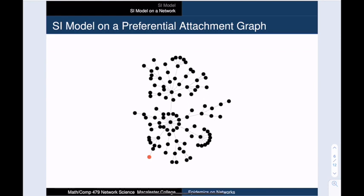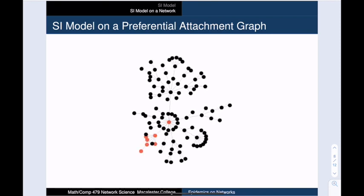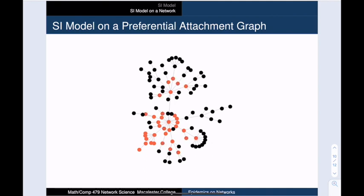Here is what the SI model would look like on a power law graph generated using preferential attachment. This infection starts at a single vertex of degree 1. Then it spreads to its neighbor, which has higher degree. The infection then spreads to some of its neighbors, including a hub vertex. At that point, the rate of infection increases because this hub vertex has so many neighbors. By the next step, over half the vertices are infected, and the epidemic continues.